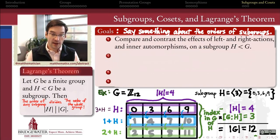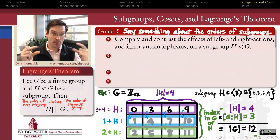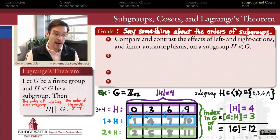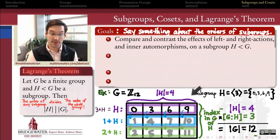Our first step towards understanding and proving Lagrange's theorem — that the order of any subgroup of a finite group is a divisor of the order of the whole group — will be to understand how to take a subgroup and move it around within its parent group in a specific way. We're going to move the subgroup around by acting upon it on the left or the right, and to understand how that works in a broader context that's not just as simple as the cyclic case we saw in the introduction.